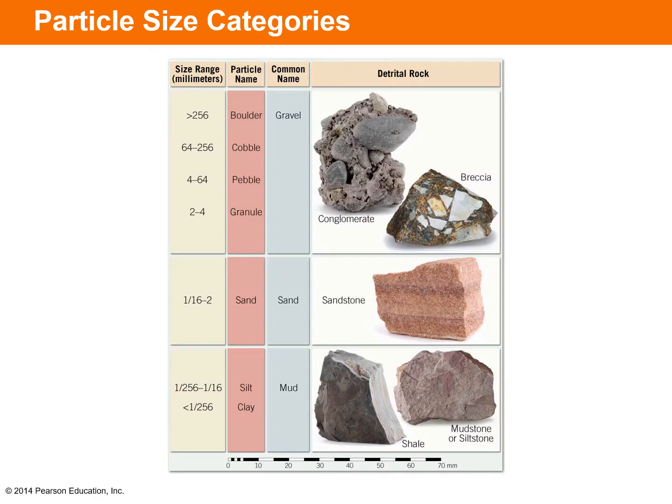This figure shows how detrital sedimentary rocks are classified based on particle size. At the top you have conglomerate and breccia, which can contain particle sizes from granules (2–4 mm) to boulders (greater than 256 mm). The difference between the two is that conglomerates are rounded particles lithified together, whereas breccia are angular particles of rock lithified together.